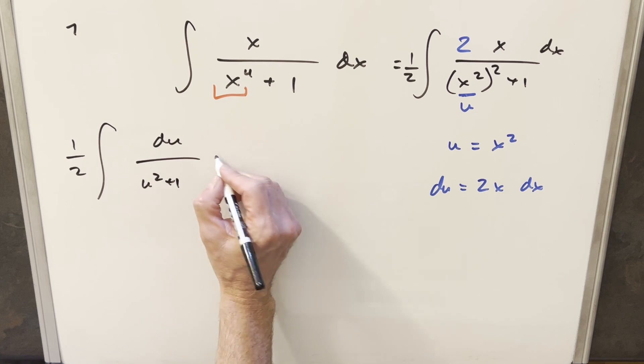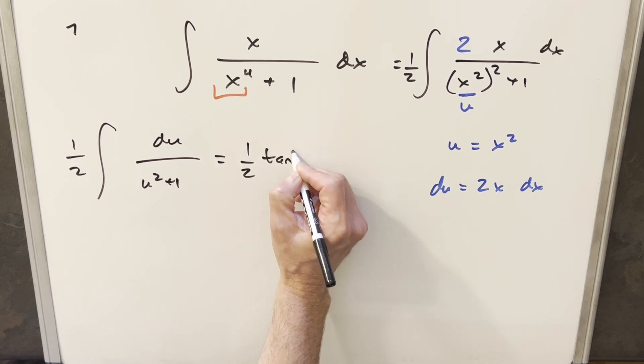So this is going to transform into 1 half du over just u squared plus 1. But this integral is just arctan, so we're going to integrate this to 1 half arctan of u.